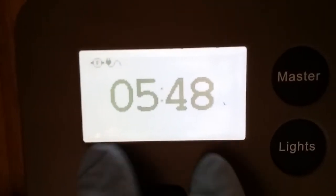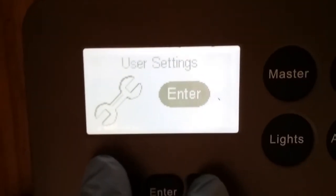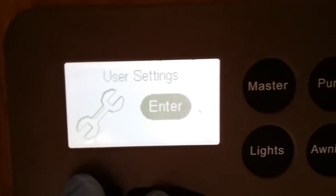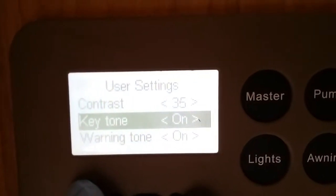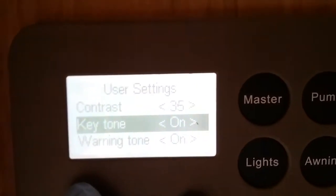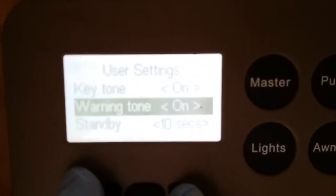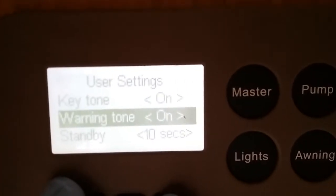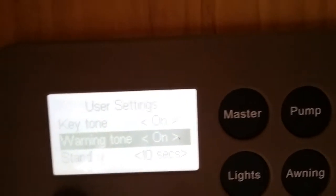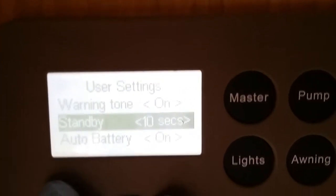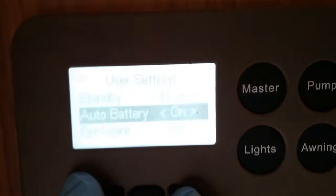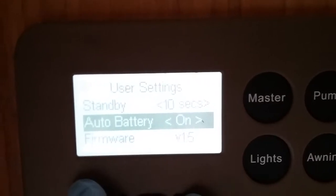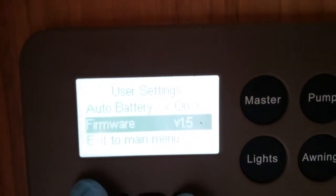If I then arrow across we have the user settings, and if I press the enter button we can go into that and we can alter the contrast, turn down key beeps on and off, warnings on and off so it'll just let you know if you lose main supply, how quickly before it goes into standby when you're not using it. Just leave the auto battery on, you don't need to worry about that, and what firmware it's running.